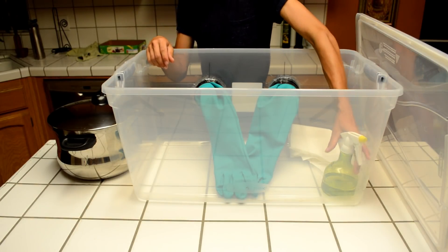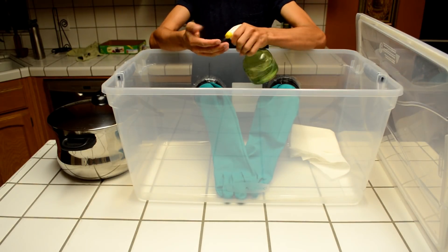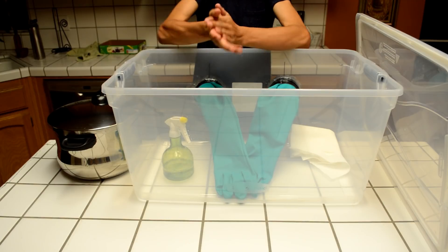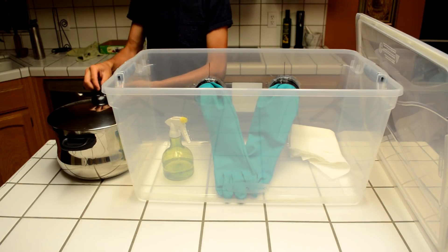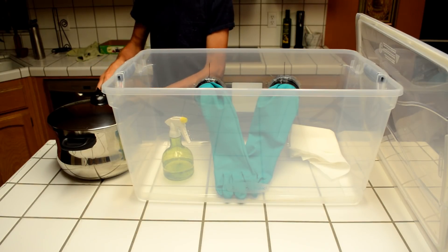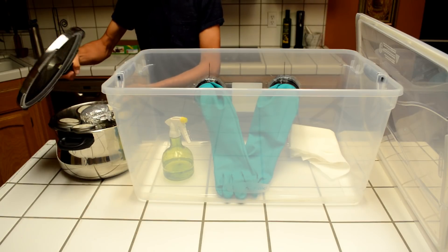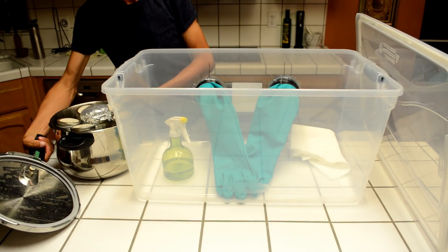Now that we have sterilized our glove box and our pressure cooker has cooled, we can begin the final steps. Go ahead and sanitize your hands with ISO as well as the pressure cooker handle you are about to grasp. Open up the cooker and quickly but gently get your materials out of the cooker into the glove box and seal the lid shut.